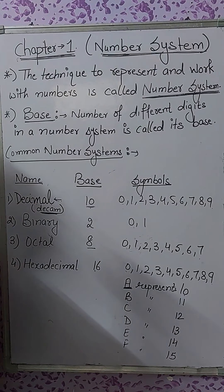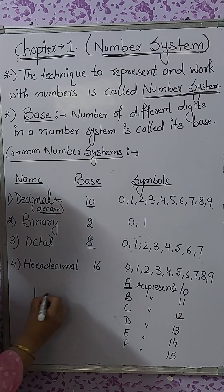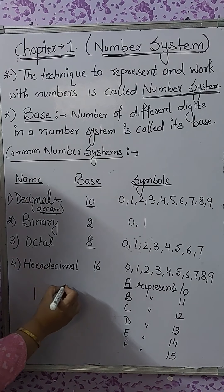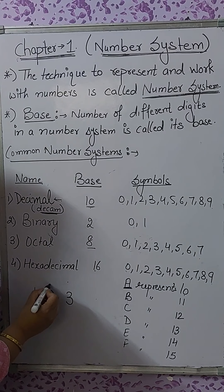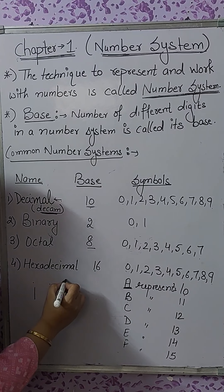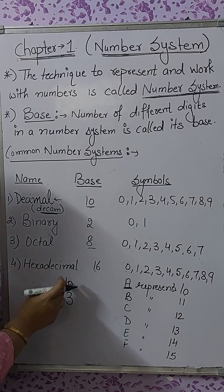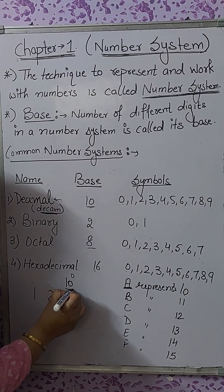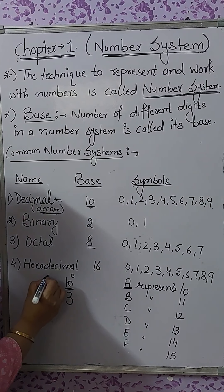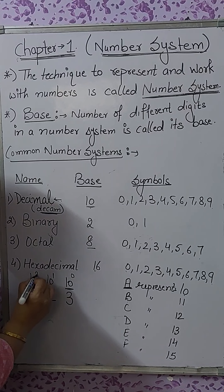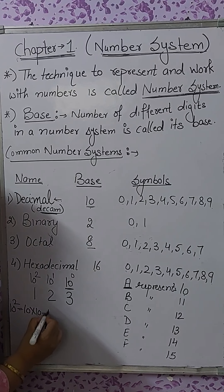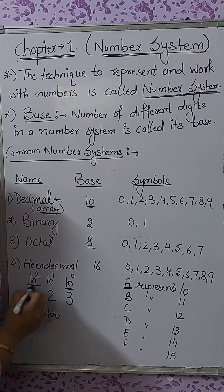In a positional number system, the value of every digit depends upon its place and position. For example, take the number 123. In the decimal number system used in daily life, 3 is in the unit place, 2 is in the 10th place, and 1 is in the 100th place. This means every digit has its own positional value. This place is 10 raised to the power 0, the next is 10 raised to the power 1, and the next is 10 raised to the power 2. 10 raised to the power 2 means 10 into 10, that is equal to 100. That is why the positional value here is 100.